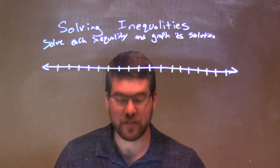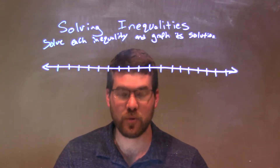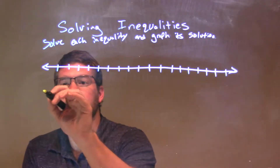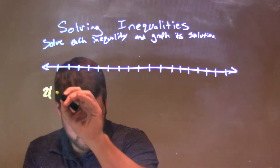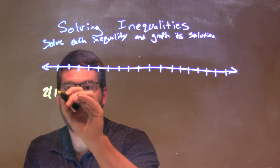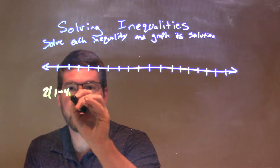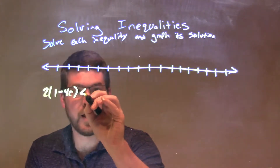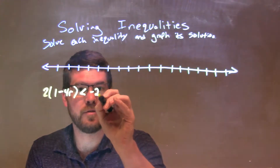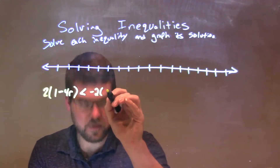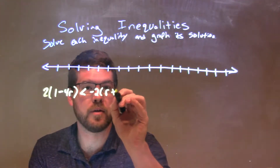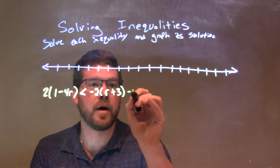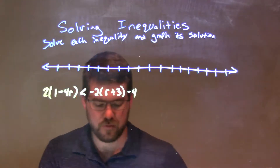If I was given this inequality: 2 times (1 minus 4r) is less than negative 2 times (r plus 3) minus 4.